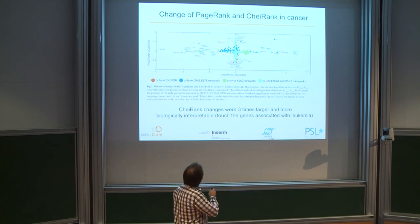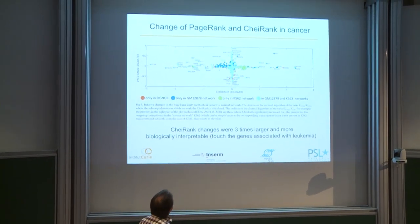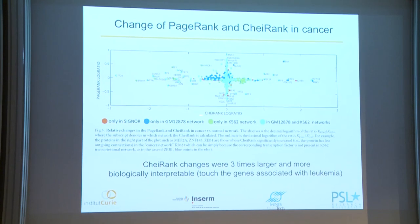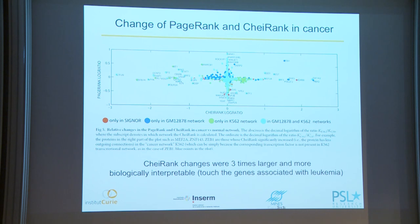Looking at changes in CheiRank and PageRank between normal and cancer conditions in this leukemia study, one of the first observations was that the log ratio of CheiRank changes was three orders of magnitude larger than PageRank changes. This indicates that in cancer, most changes are happening in the transcriptional network at the level of outgoing edges, meaning some proteins that are potent regulators of multiple biological processes are completely rewired between normal and cancer.